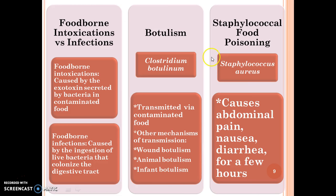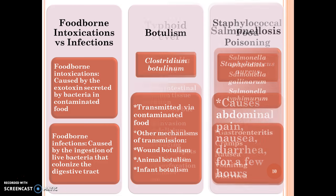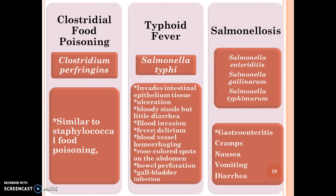Staphylococcal food poisoning is caused by Staphylococcus aureus and causes abdominal pain, nausea and diarrhea lasting a few hours. Clostridial food poisoning is caused by Clostridium perfringens and is similar to staphylococcal food poisoning.